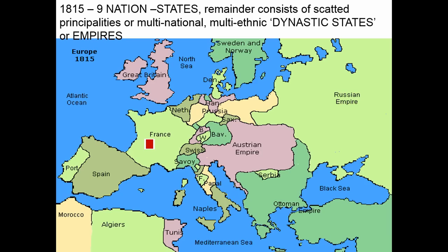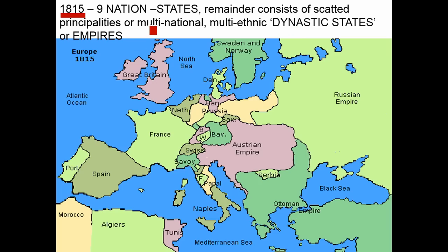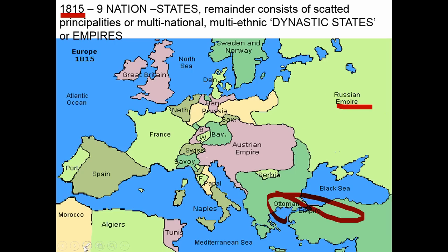To discuss nationalism initially, a starting point could be to look at the map of Europe in 1815, at the end of the French revolutionary process and the defeat of revolutionary France at Waterloo. At that time we can identify probably nine nation states or distinctive nations such as Sweden, Norway, France, Spain, Portugal and Great Britain, with the rest of Europe consisting of a number of small principalities and great dynastic autocratic states which were multinational and multi-ethnic: the Austrian Empire, the Ottoman Empire and the Russian Empire.